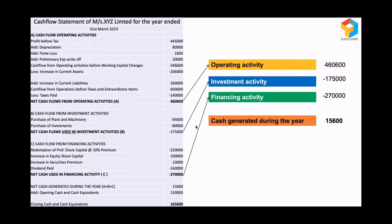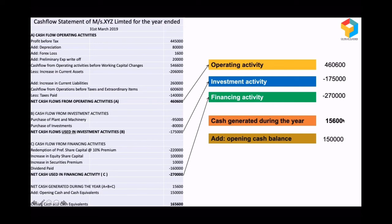Despite all this, they still have positive cash of 15,600. We need not worry, because look at their opening cash and cash equivalents position — they already had 1,50,000. Adding 1,50,000 with what they made during the year, their closing position is really comfortable — actually better than the previous year. Previous year it was 1,50,000 and at the end of the current year it is 1,65,600. So when I look at the cash flow statement, things are looking very good.